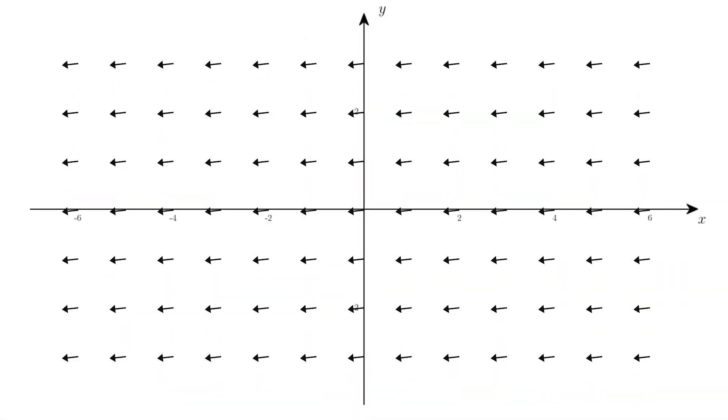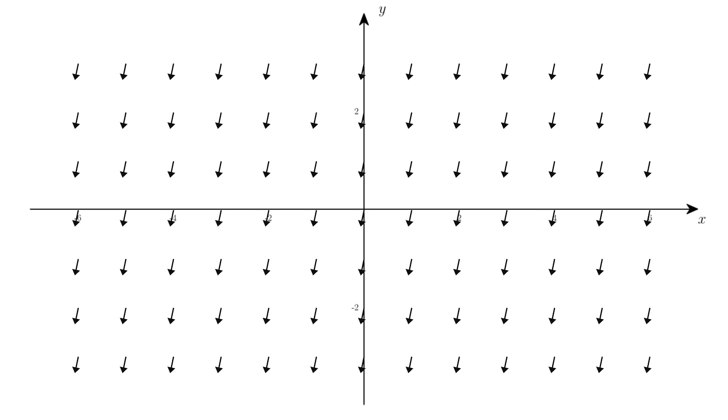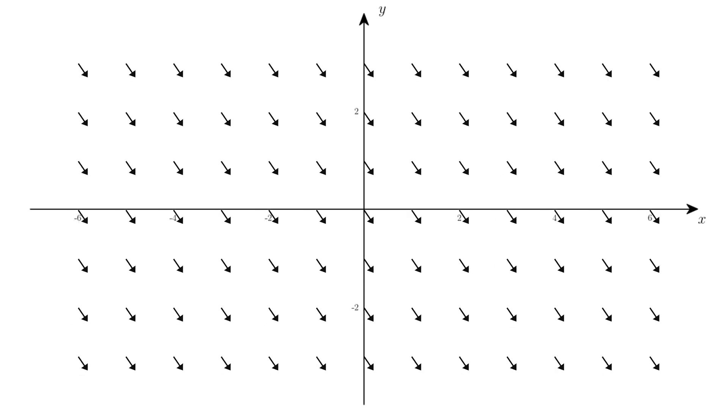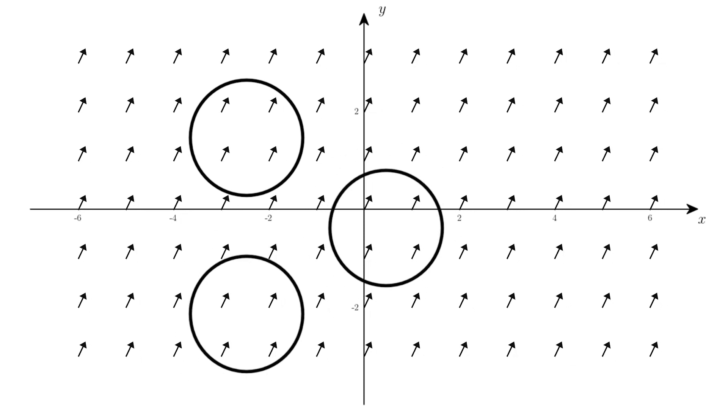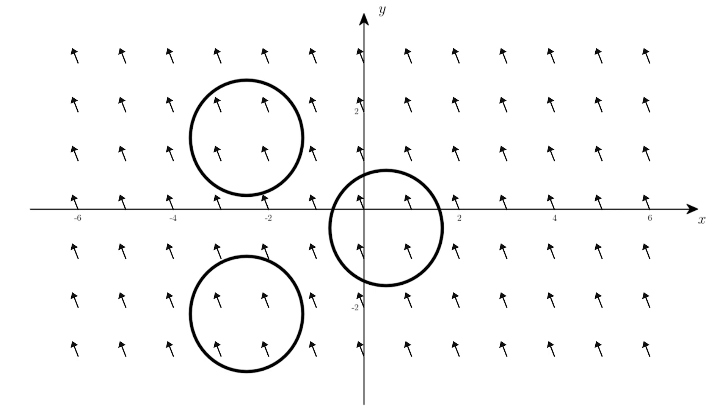There's also a different scenario: vectors just pointing in one direction with the same size. It could be wind moving around with no turbulence. And wherever we put our circle, there are as many vectors going in as going out, and so the divergence is zero everywhere.